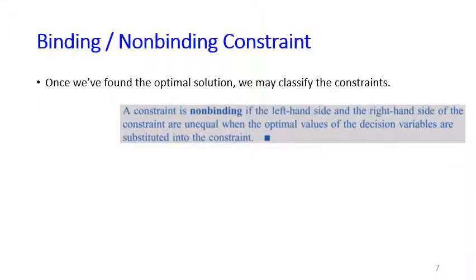We call a constraint non-binding if the left-hand side and the right-hand side of the constraints are unequal when we plug in the optimal values. So this is important. You need to plug in the optimal values to check whether a constraint is binding or non-binding.